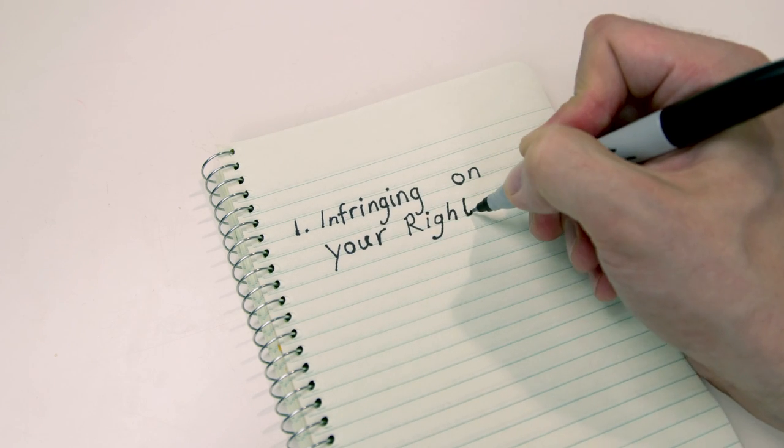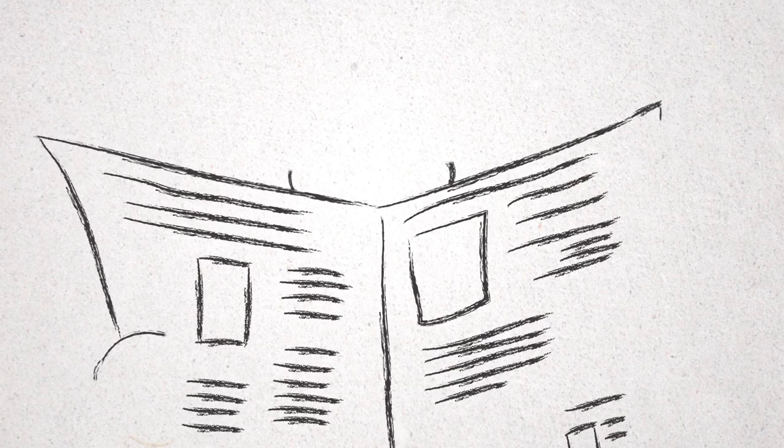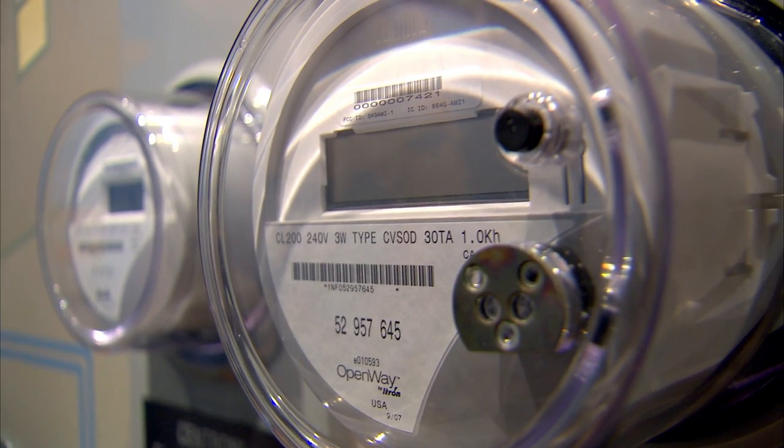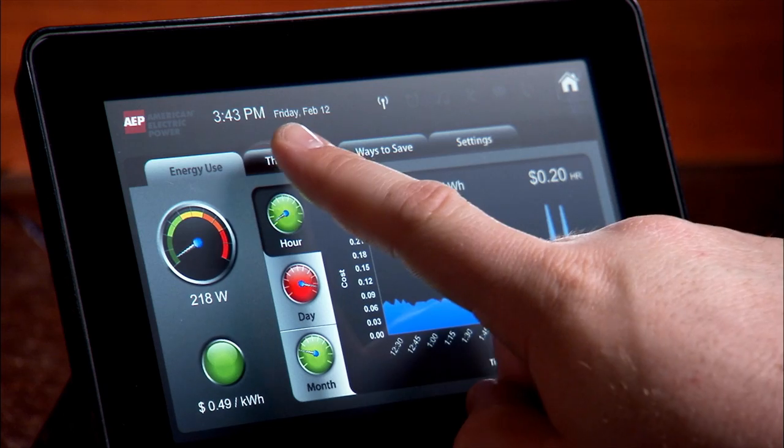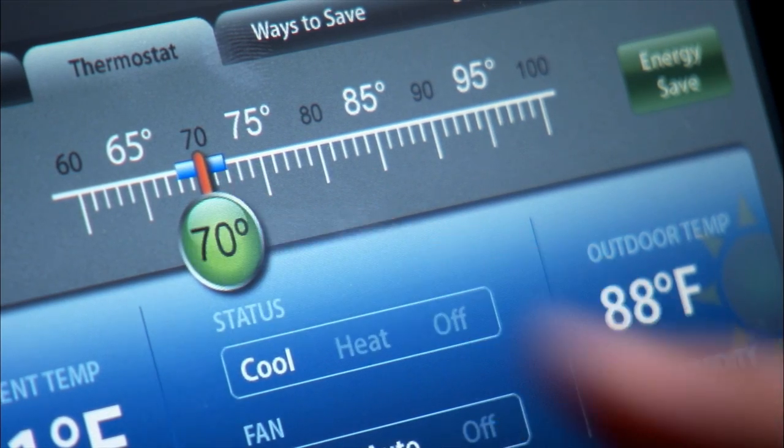A lot of noise has been made about smart meters monitoring the individual actions that take place inside of your home. The only problem with that is that smart meters only know how much power you're using, not specifically how you're using that power. And most of the time, the meter is idle.